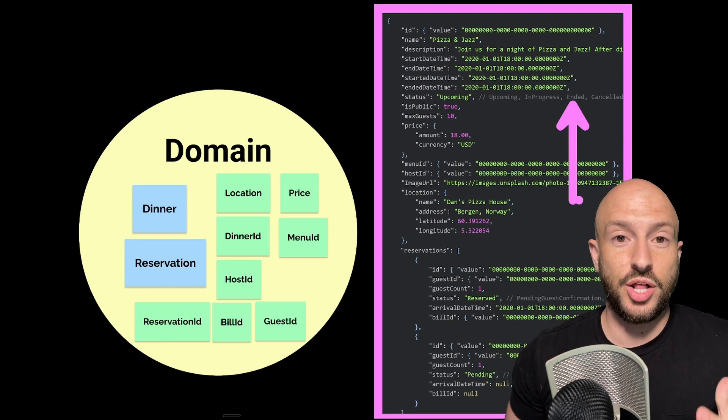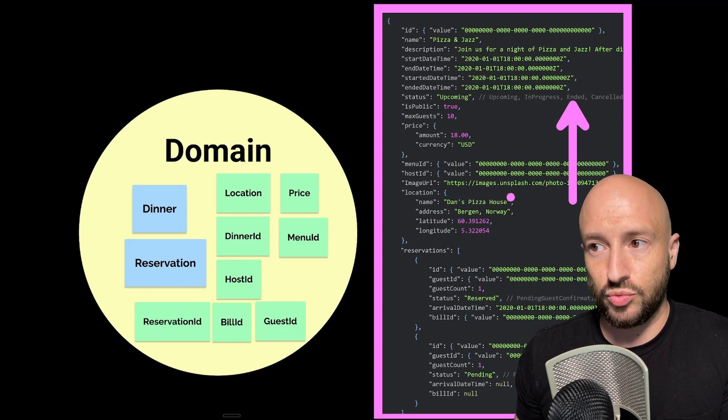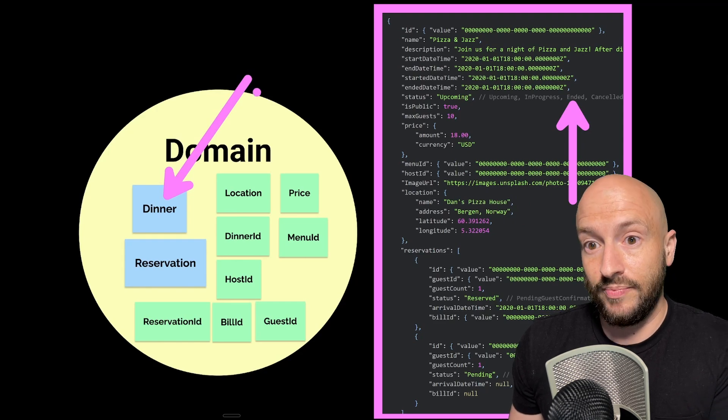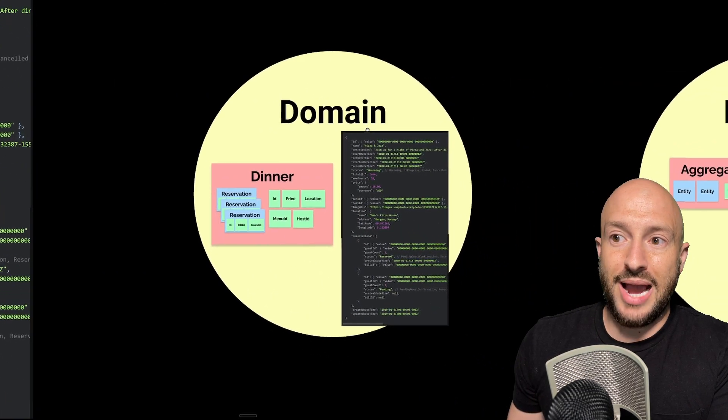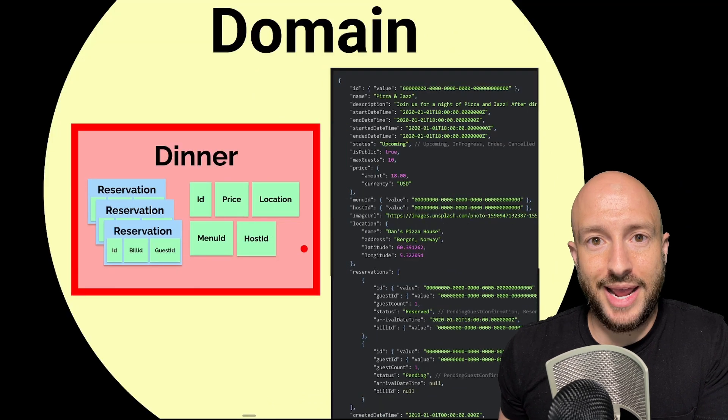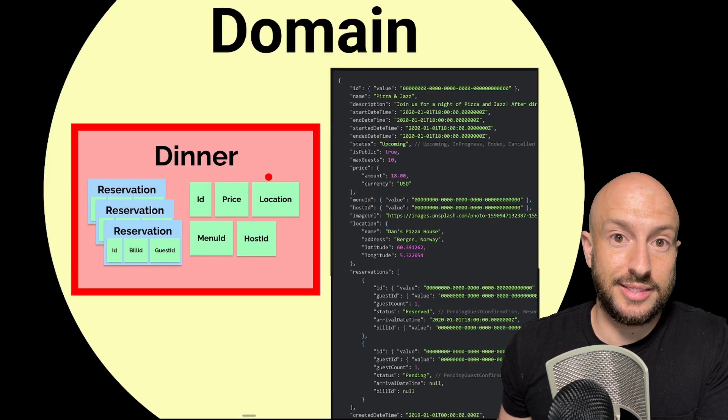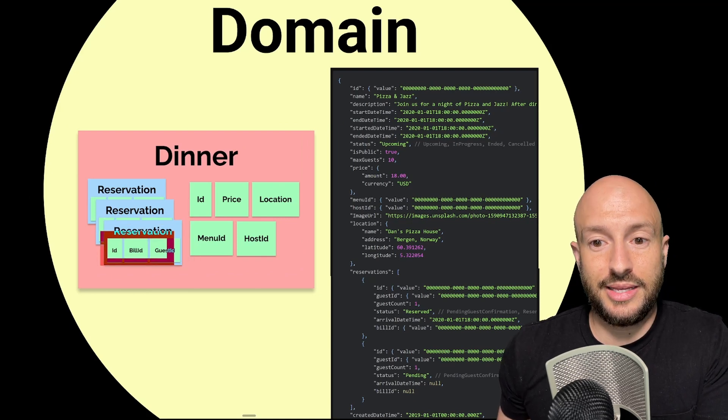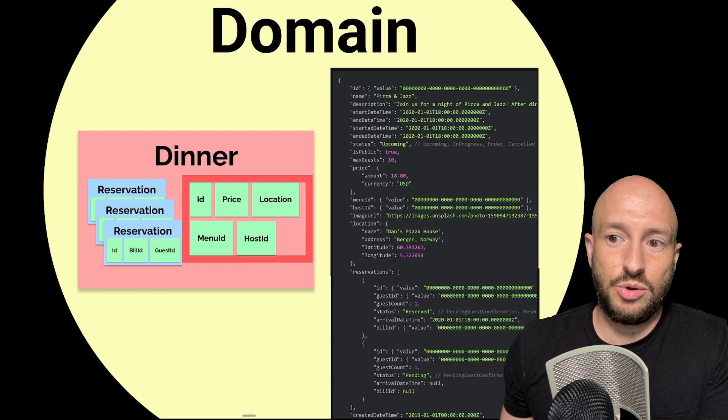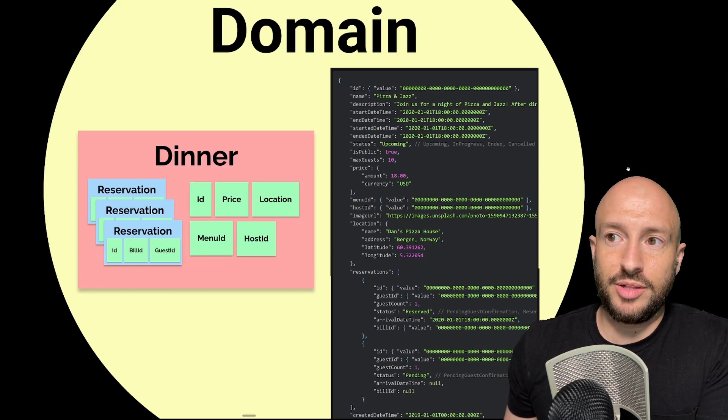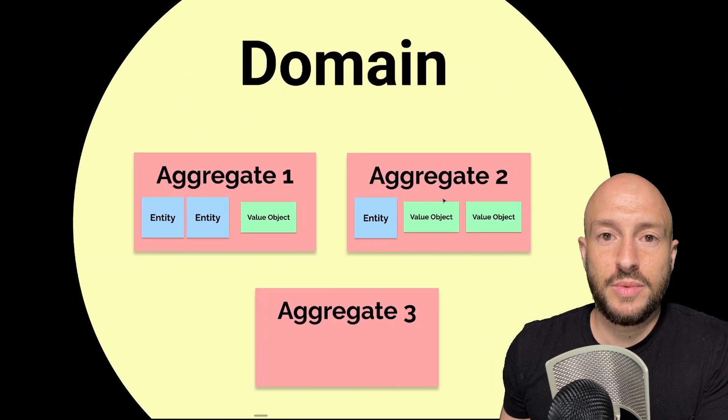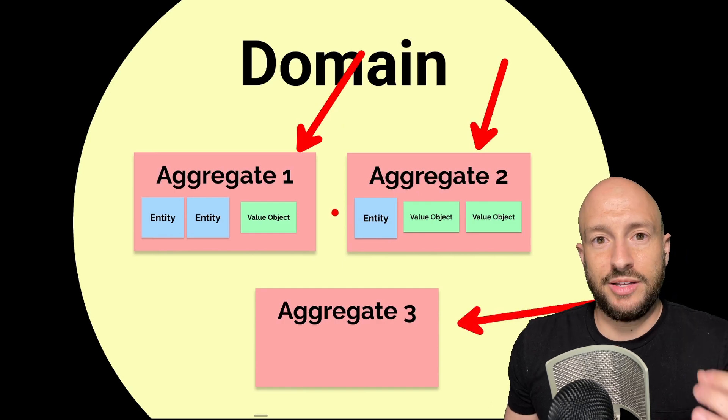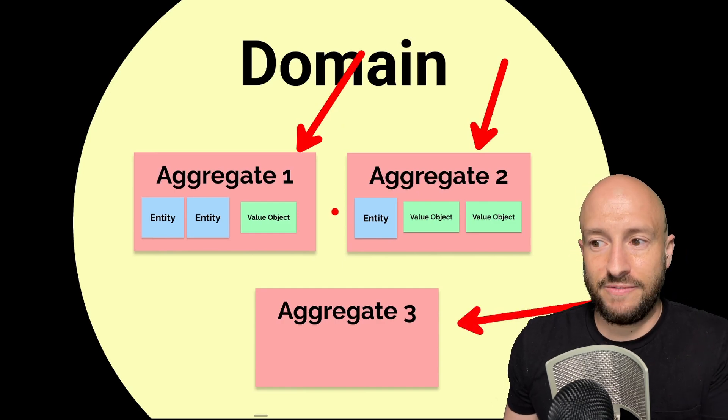Now the entity that is the root of the aggregate is called the aggregate root. So in our case, the dinner isn't just an entity, it's the aggregate root in this case. So if we look at it from our new perspective, we see we have the dinner aggregate, where the dinner entity is the aggregate root, which internally has a list of reservations that has internally some value objects, and same goes for the dinner. And if we generalize it for domain layers in general, the domain layer will look as following. We'll have various aggregates which have internally zero or more entities and value objects.